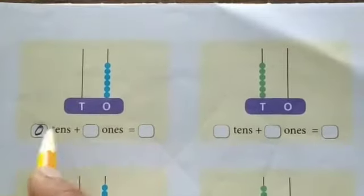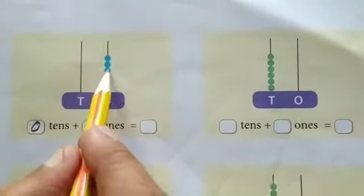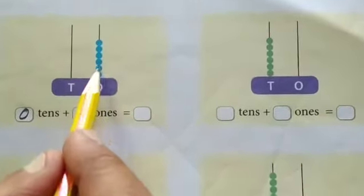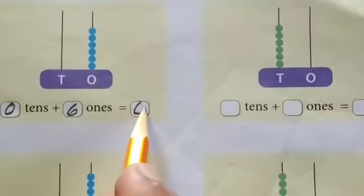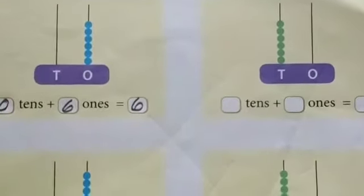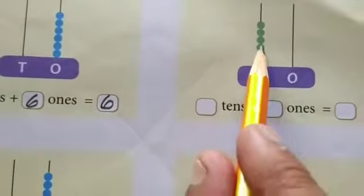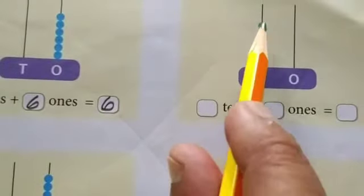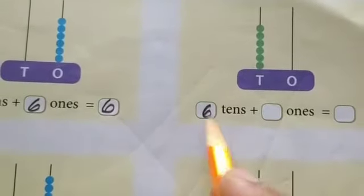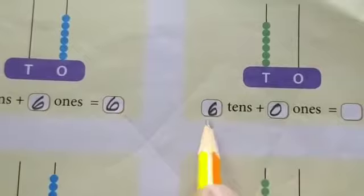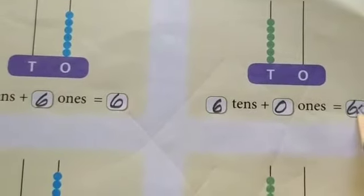Six tens. And here, zero tens and six ones. Six ones is equal to six only.